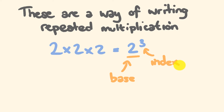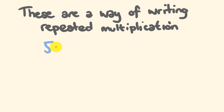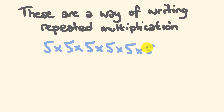That's fairly simple. What about another example — 5 times 5 times 5 times 5 times 5 times 5? The base is 5. Now we count how many 5s are being multiplied: 1, 2, 3, 4, 5, 6 — so this is 5 to the power of 6.